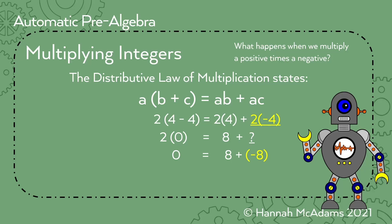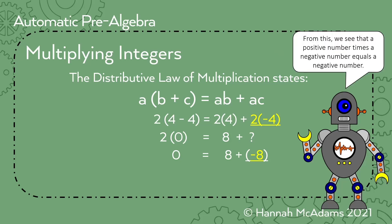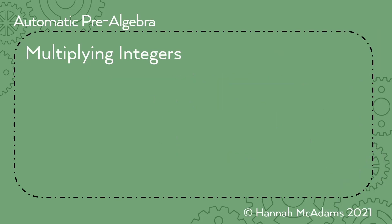So if you have two times negative four, you get negative eight. So what happens when we multiply a positive times a negative? You get a negative. From this we see that a positive times a negative is a negative.